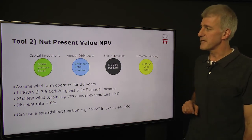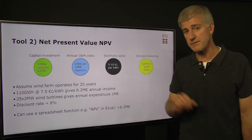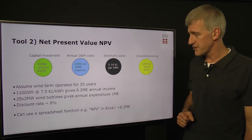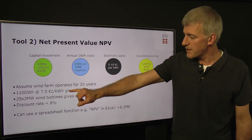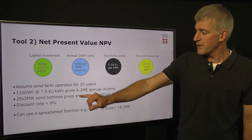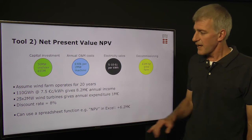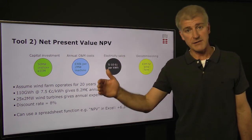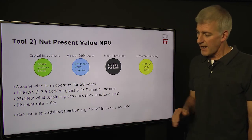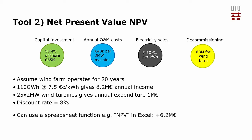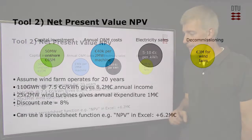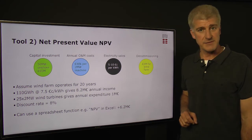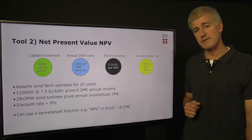Looking at some of the figures for this net present value calculation — the same figures as used for the simple payback time — we assume the wind farm will operate for 20 years, so we have 20 years of production. We know how much it's going to produce and what we're going to get per kilowatt hour. We also know the maintenance costs, and here we've introduced the discount rate — the value used to translate future money back to today's value. The simplest way to do this is using a spreadsheet such as Excel, which has an NPV function. Feeding these figures into the NPV function, this wind farm project has a net present value of around 6 million euros, so this is a project we should continue looking at.